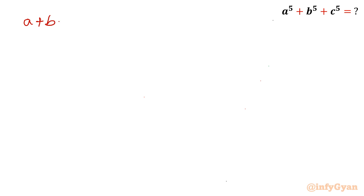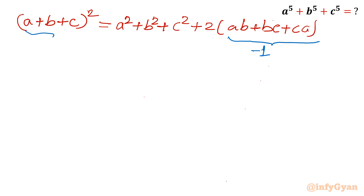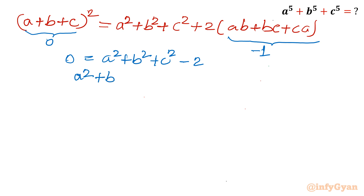Using the algebraic identity (A + B + C)² = A² + B² + C² + 2(AB + BC + CA): we have (0)² = A² + B² + C² + 2(-1), so 0 = A² + B² + C² - 2. Adding 2 to both sides: A² + B² + C² = 2.